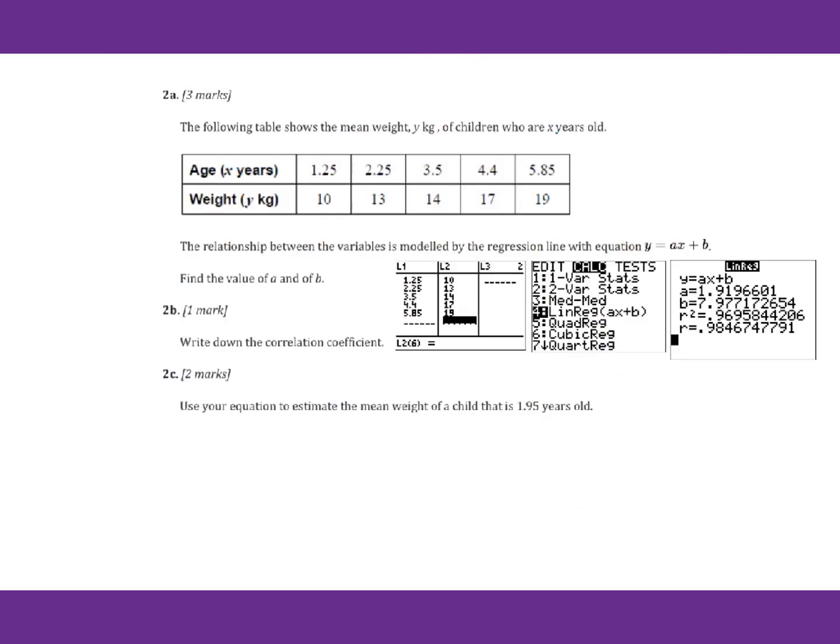For problem 2a, the following table shows mean weight y kilograms of children who were x years old. The relationship between the variables is modeled by regression line with y equals ax plus b. Find the value of a and b.